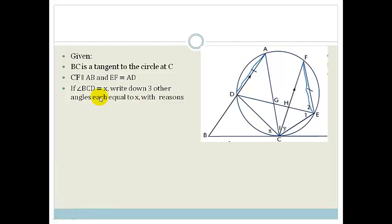So now they say, if BCD is X, write down three other angles also equal to X with reason. So the minute that I hear that this is a tangent, I start looking for tan chord theorems. And I see that X is between the tangent and this chord, which is DC. And the chord DC makes an angle up here at A. It's subtended, so therefore I would say that that is X. So immediately I'm going to say, I know that angle DAC equals X. Why? Because of the tan chord theorem. There we go, we've got the first one.